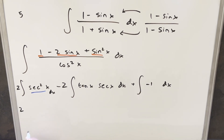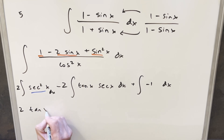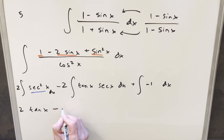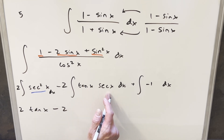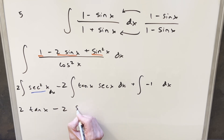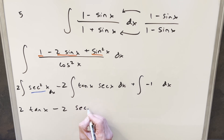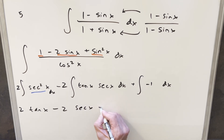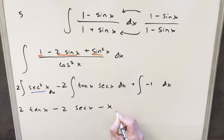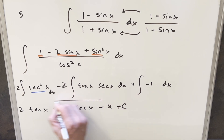At this point we've got three easy integrals. The integral of secant squared x gives tan x. Minus 2 times the integral of tan x times secant x gives minus 2 secant x. And the integral of minus 1 is minus x plus C. And that's it.